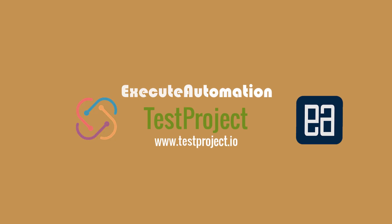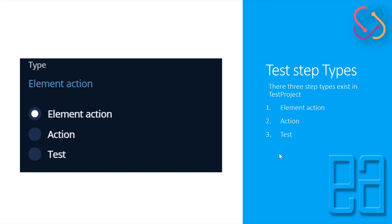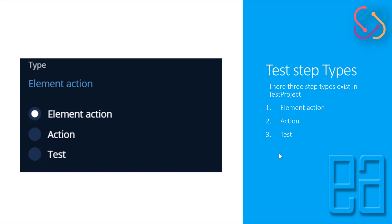Hi guys, my name is Karthik and I am from ExitAutomation.com. Welcome to another video of our test project course. In this video we'll be talking about calling a test within test steps. In our last video we saw there are three step types in TestProject: element actions, actions, and test. We saw that the step type 'test' can call another test, but we didn't see this in action because we had much to discuss on the element action and action side. This video is fully dedicated to running a test within a test.